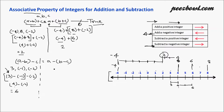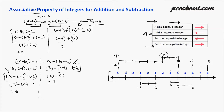Now we work on the right hand side: a − (b − c), that is 3 − ((−1) − (−2)). Working on the bracket first: minus one minus minus two means we are subtracting a negative integer from minus one. We find minus one on the number line and move two units right, reaching one. So three minus one equals two. We can see that the left hand side (six) and right hand side (two) are not equal.